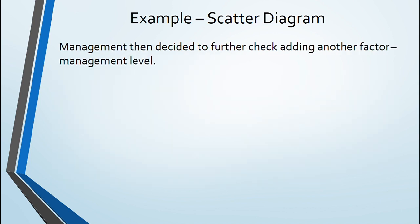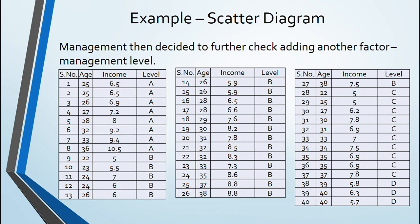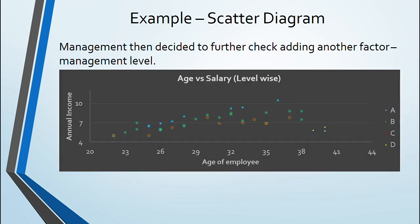Before concluding, management gave a final try to map same data using an additional factor management level. Data was again pulled and scatter diagram was again drafted. This time there were some special findings.